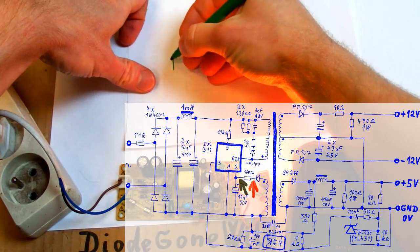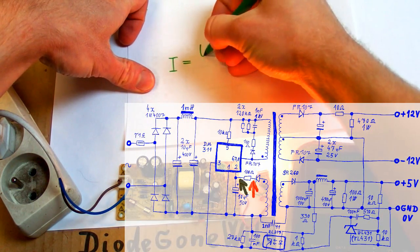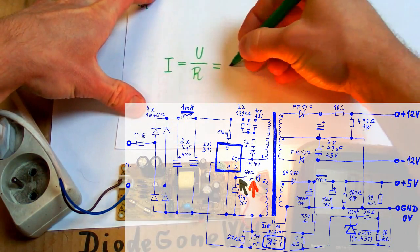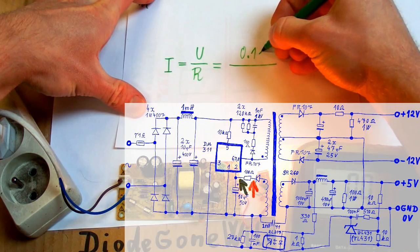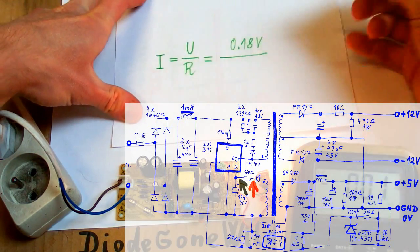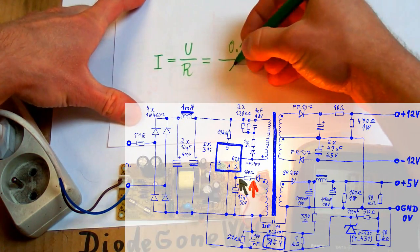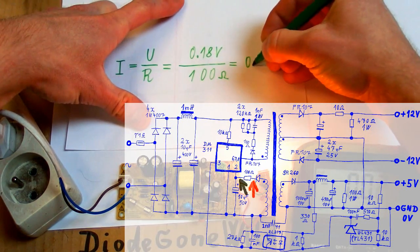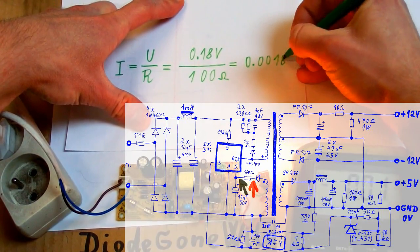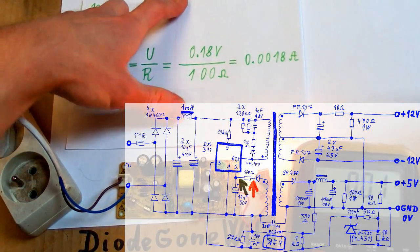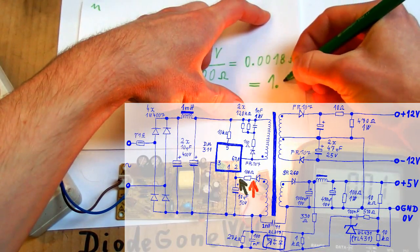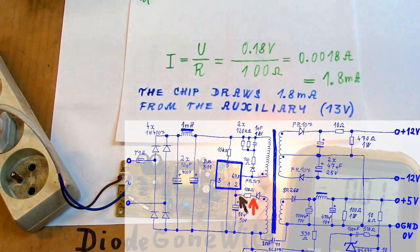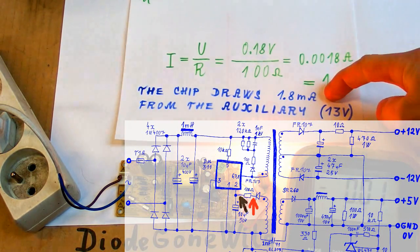So the current can be calculated now. The current is I equals U over R. U is the voltage, which is 0.18 volts. R is the resistance, which is 100 ohms. And this is 0.0018 amps or 1.8 milliamps. So the current consumption of the chip is 1.8 milliamps.